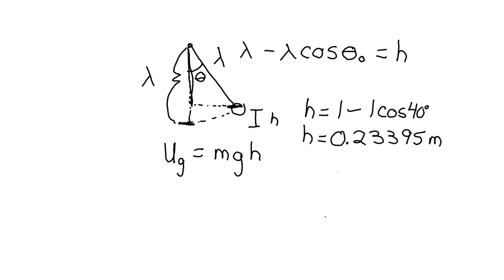So given that, if we take that h multiplied times m times g, what you end up getting is m is 1.1 kilograms, g will use a worldwide average of 9.8 newtons per kilogram, and then h is going to be, as we just figured out, 0.23395. And you multiply that out, and what you end up with is a value of 2.52 joules. And that is going to be UG.